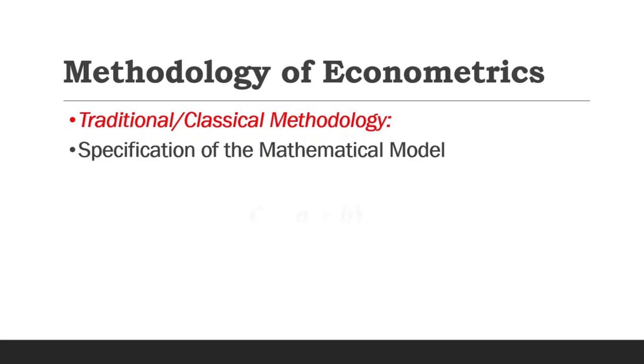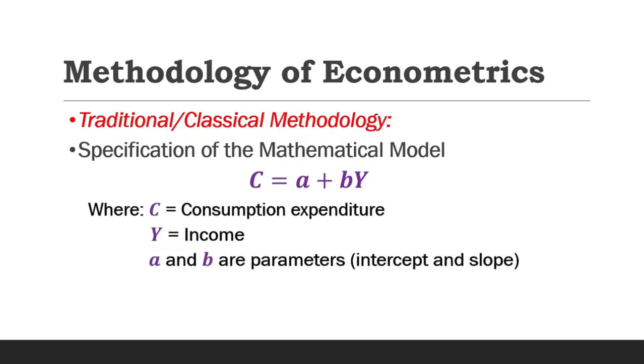Where C is consumption expenditure, Y is income. A and B are parameters and they represent the intercept and slope respectively. But in the theory, the A stands for autonomous consumption and B is marginal propensity to consume, MPC for short.